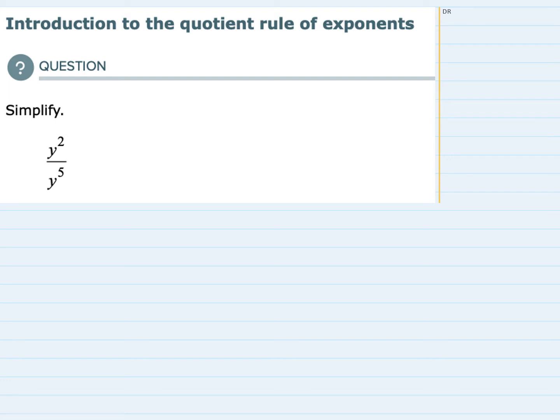We're asked to simplify, and we can see that we have y to the second power in the numerator and y to the fifth power in the denominator.